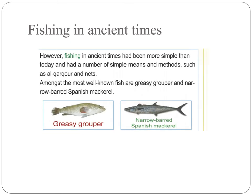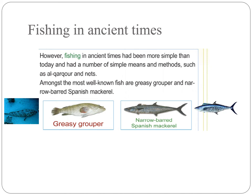There you see these were the two famous fish that were fished in ancient times. I want you to repeat after me: Greasy grouper. And the second one is called narrow barred Spanish mackerel. Can you please repeat after me, children? Narrow barred Spanish mackerel. Very good.